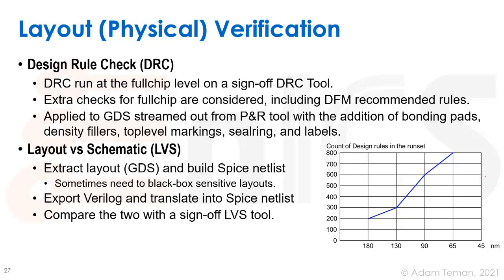Another check is LVS — Layout Versus Schematic — where we verify that the GDS being taped out, which is just polygons, is the same as the Verilog netlist we created. We have different abstracts like LEFs and black boxes, and we want to make sure their connectivity is correct and that no information was lost. To do this, you extract the GDS and build a SPICE netlist from your Verilog netlist using a tool like V2LVS, extract a SPICE netlist from the GDS, and then do formal verification between the two SPICE netlists.